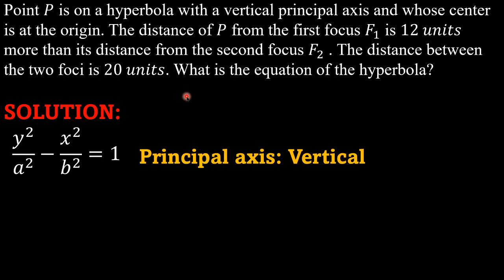Remember that the difference between the absolute value of the first focus and the second focus is equal to 2a. |PF₁| - |PF₂| = 2a. Para makuha natin ang 2a, that is 12 units. So 2a is equal to 12, and divide both sides by 2, that is a is equal to 6.